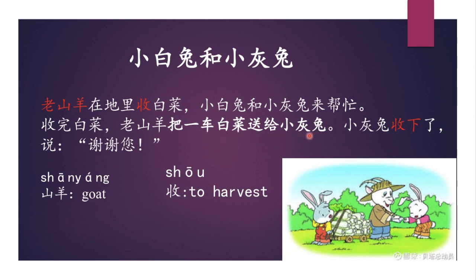老山羊把一車白菜送給小灰兔。 This is a 把 sentence. The regular word order would be 老山羊送給小灰兔一車白菜. With the 把 sentence, we put the object before the verb instead of after the verb. 老山羊把一車白菜送給小灰兔 — The old goat gave the little gray rabbit a cart of cabbage.